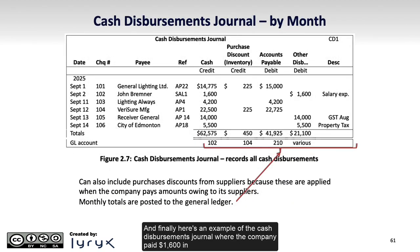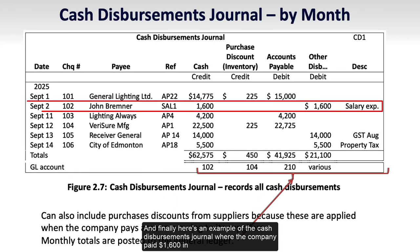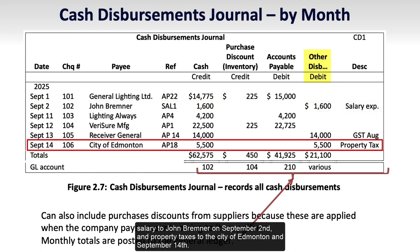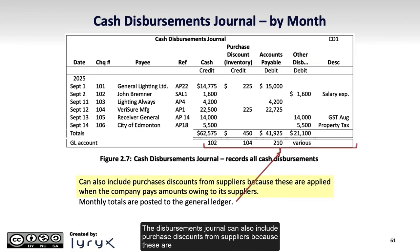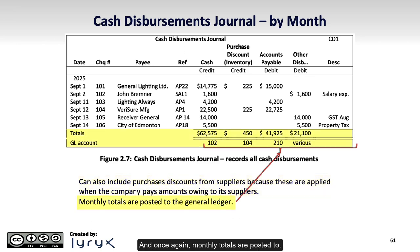And finally, here's an example of the cash disbursements journal, where the company paid $1,600 in salary to John Bremner on September 2nd, and property taxes to the City of Edmonton on September 14th. The disbursements journal can also include purchase discounts from suppliers, because these are applied when the company pays amounts owing to suppliers. And once again, monthly totals are posted to the GL.